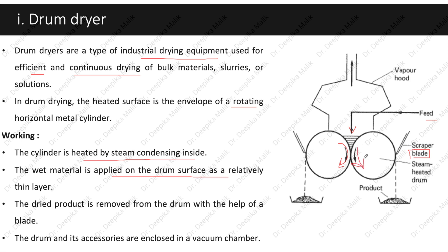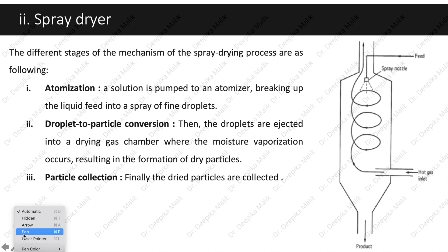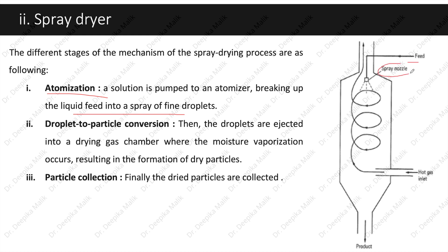The next method is the spray dryer. The stages of the spray drying process are: first, atomization, where a solution is pumped to an atomizer breaking up the liquid feed into a spray of fine droplets, as seen in the diagram. Second, droplet to particle conversion, where the droplets are ejected into a drying gas chamber, moisture vaporization occurs, resulting in the formation of dry particles. Third, particle collection, where the dried particles are collected from the base.